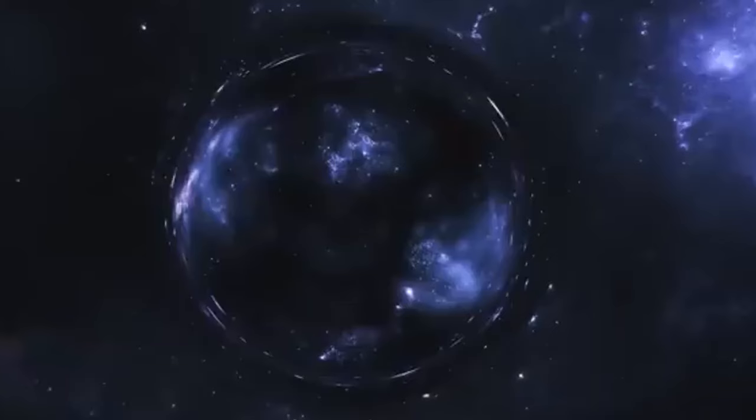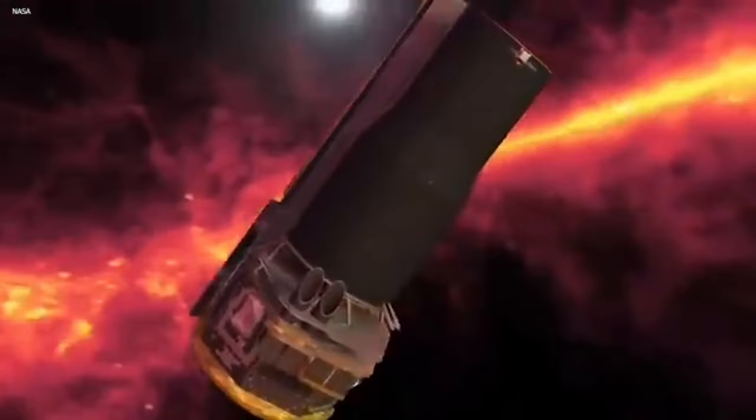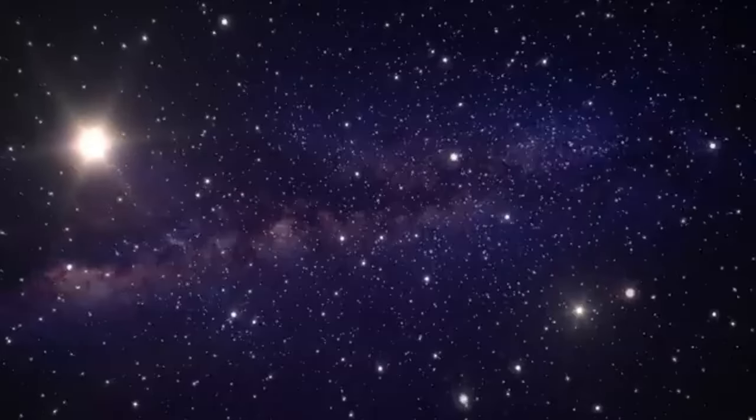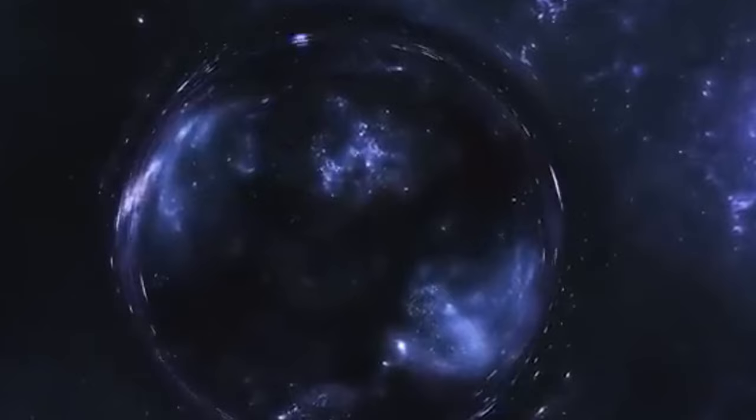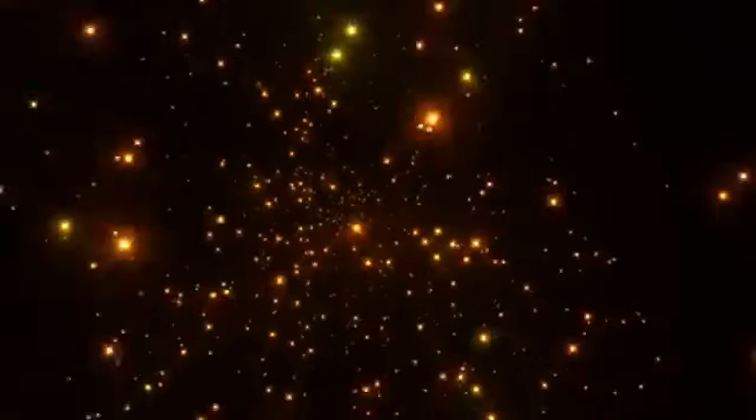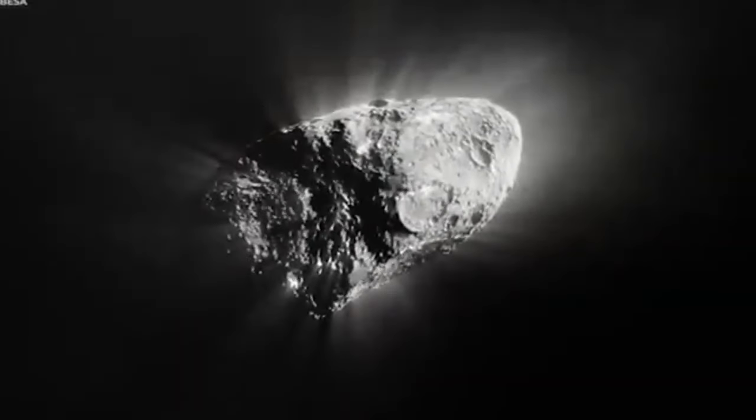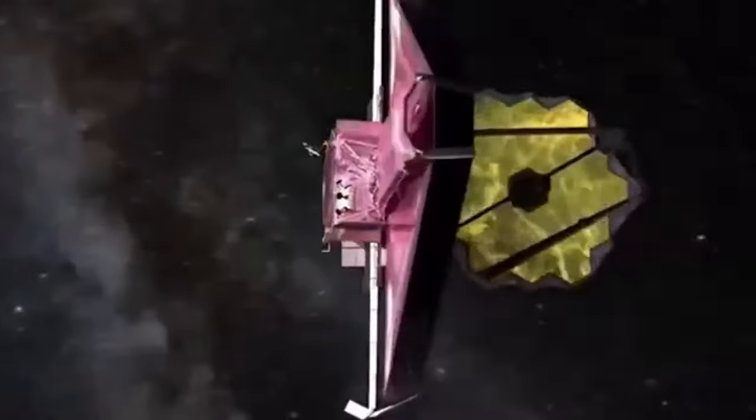At the heart of this remarkable observatory lies a complex array of four unit telescopes, each boasting an impressive primary mirror diameter of 8.2 meters. These colossal mirrors harness the faintest whispers of light emitted by distant celestial objects, enabling astronomers to peer deep into the cosmos with unparalleled clarity. Complementing the unit telescopes are four smaller auxiliary telescopes, strategically positioned to enhance the observational prowess of the VLT. Together, these telescopes form a formidable interferometric system known as the VLT Interferometer, VLTI.